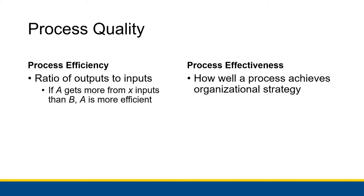You have to get a good balance between efficiency and effectiveness for a process to be high quality. You can have very high efficiency processes that aren't effective because they don't achieve the goals at all — they just do something else entirely. And you can have processes that work really well towards the strategy but require way more inputs than any other alternative processes out there. There are ways for a process to be high efficiency and low effectiveness, or high effectiveness and low efficiency. We want to make organizational processes that are as high in efficiency as possible and as high in effectiveness as possible.